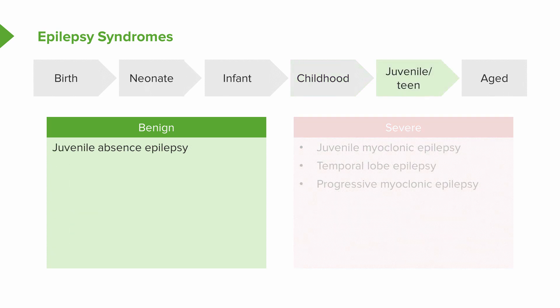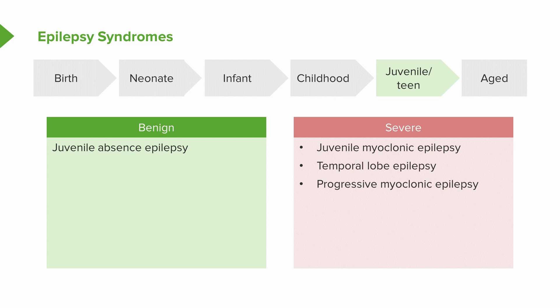As we move forward into the adolescent age range, we see juvenile absence epilepsy. Juvenile myoclonic epilepsy is seen in a more severe phenotype. We can start to see temporal lobe epilepsies and progressive myoclonic epilepsies.